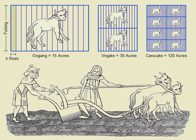The word 'acre' is derived from Old English, originally meaning 'open field,' cognate to West Coast Norwegian and Swedish 'acre,' German 'Acre,' Dutch 'Acre,' Latin 'Aja,' Sanskrit 'Ajaar,' and Greek 'agros.' In English, it was historically spelled 'Acre.'